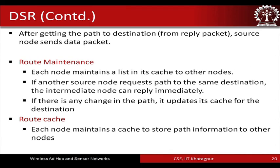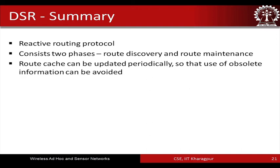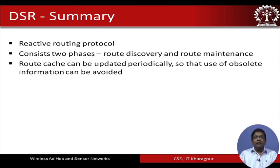After getting the path via the route reply, the source node sends the data packet. Then comes the route maintenance phase, where each node maintains a list in its cache to other nodes. If another source node requests the path to the same destination, an intermediate node can reply immediately using its cached route information. If there is any change in the path, the cache is updated. Route cache is updated periodically so that obsolete information can be avoided.